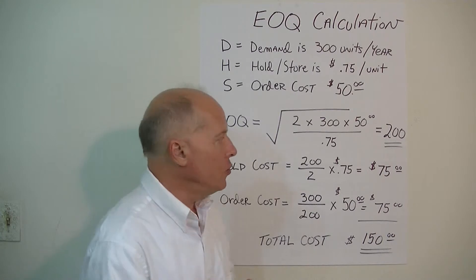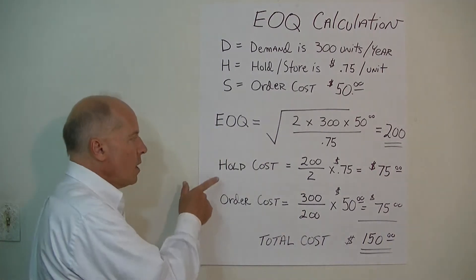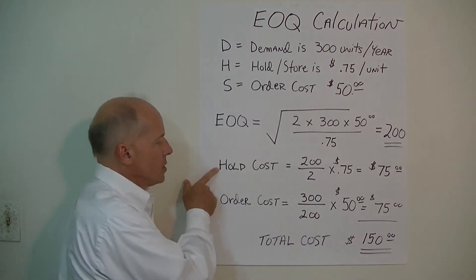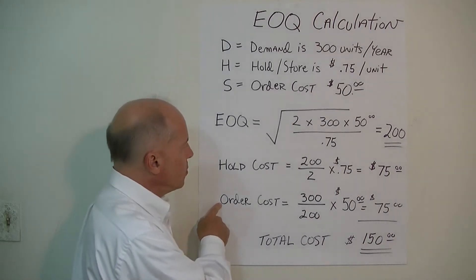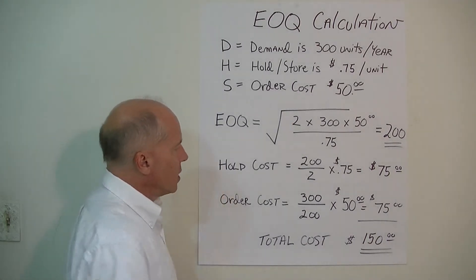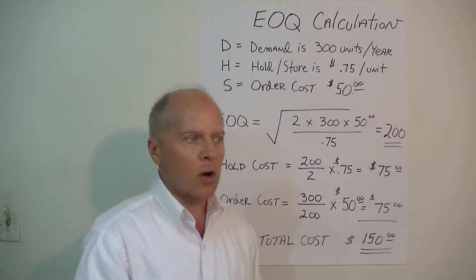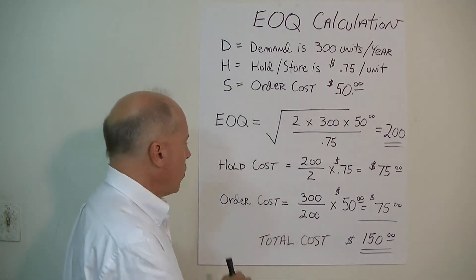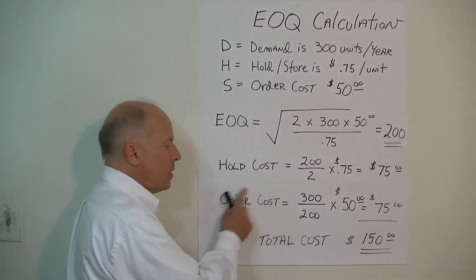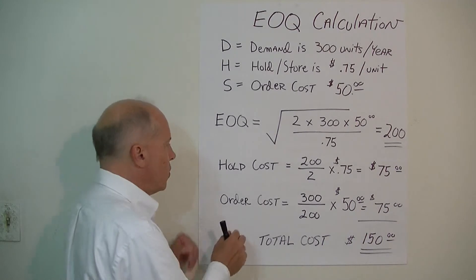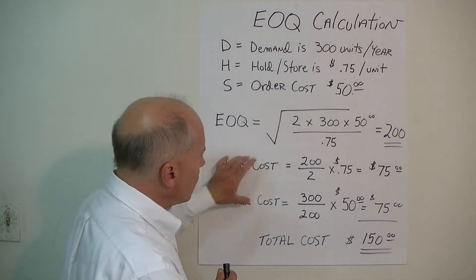What I would recommend is to figure out your holding cost and your order cost. You should be able to measure these two: How much does it cost to store and hold inventory? What's the time and expense to actually place the order? You should be able to figure these out.